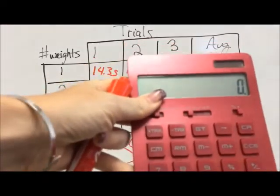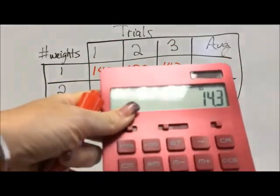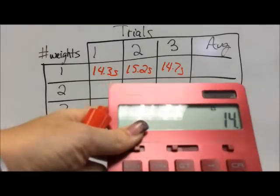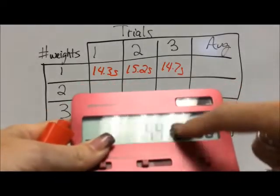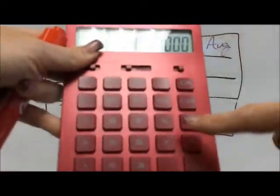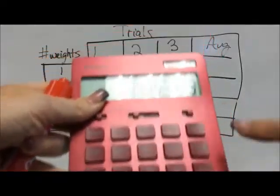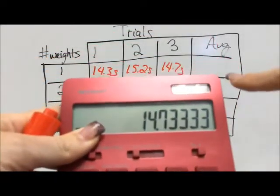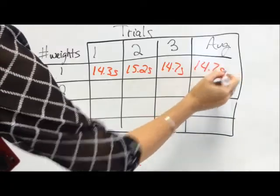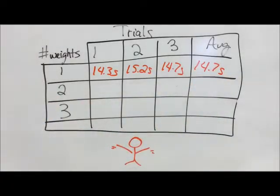Do 14.3 plus 15.2 plus 14.7, and notice I get 44.2. That's not the average—I need to divide by the number of things I added together, which is three things, and that gives me an average of 14.7 seconds.